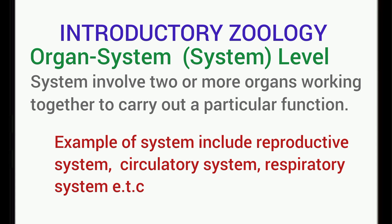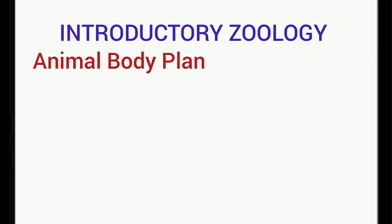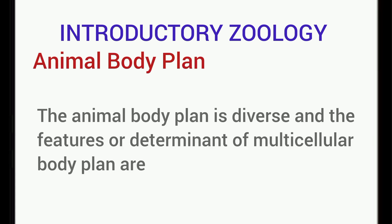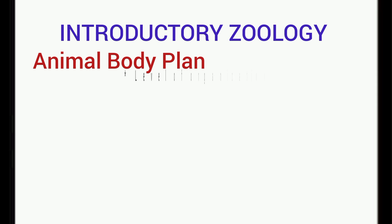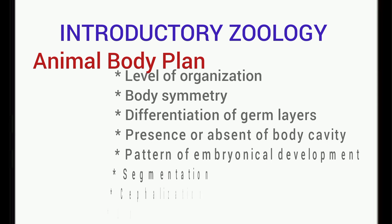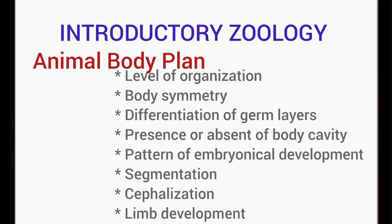Let's talk about the animal body plan. The animal body plan is diverse and the features or determinants of the animal body plan are the levels of organization, body symmetry, differentiation of germ layers, presence or absence of body cavity, pattern of embryological development, segmentation or metamerism, cephalization, and limb development.